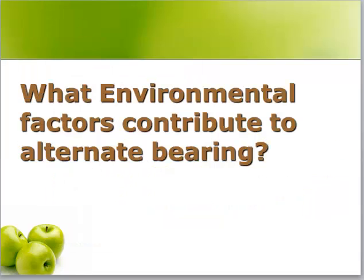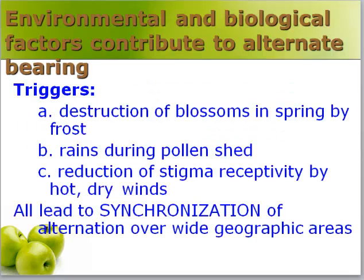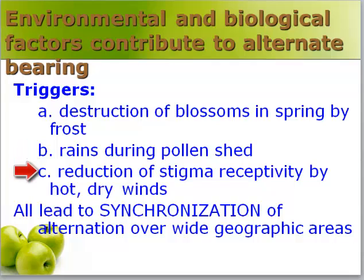I'd like to discuss environmental factors that contribute to alternate bearing. There are a number of environmental triggers, including: a) destruction of blossoms in spring by frost, b) rains during pollen shed, and c) reduction of stigma receptivity by hot, dry winds — which has been a particular problem for the prune industry of late. All these triggers lead to synchronization of alternate bearing over wide geographic areas.